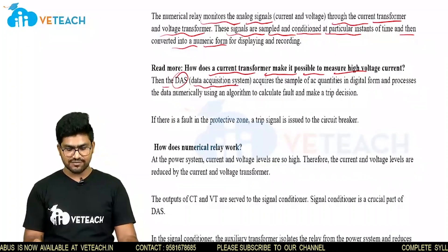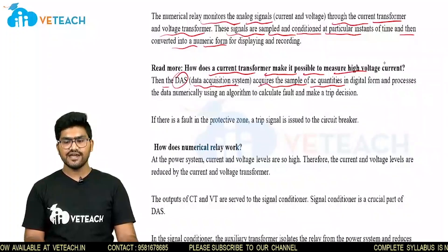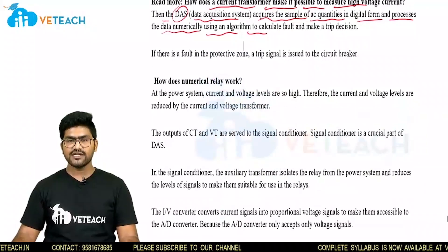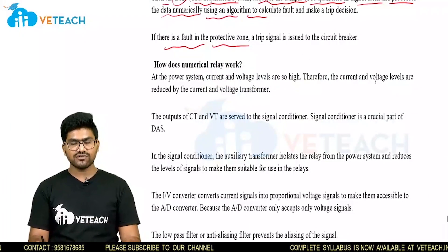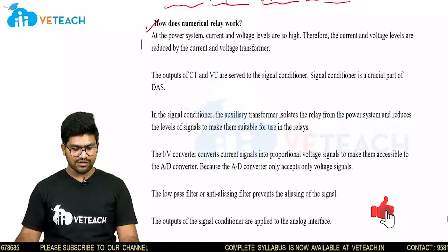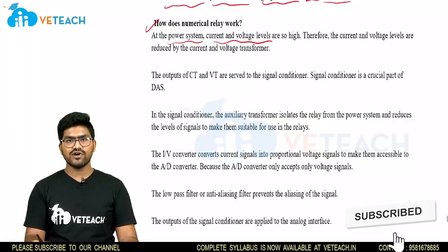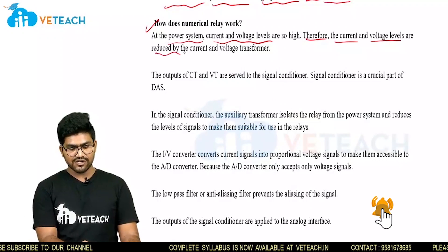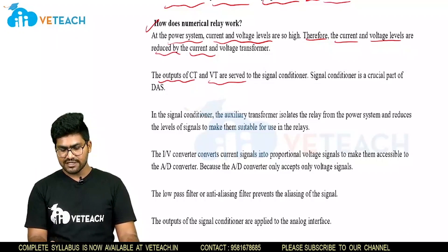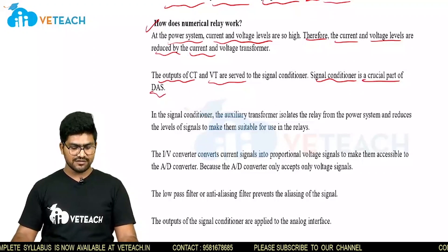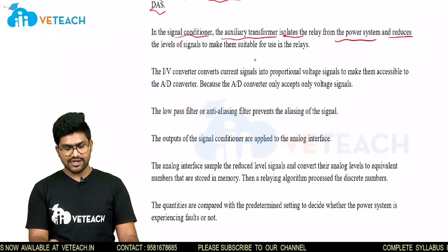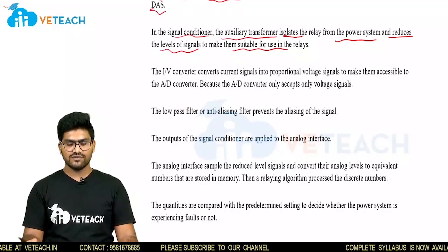A DAS, meaning data acquisition system, acquires samples of AC quantities in digital form and processes data numerically using algorithms to calculate faults and make a trip decision. If there is a fault in the protective zone, the trip signal is issued to the circuit breaker. At the power system, current and voltage levels are very high. Therefore, the current and voltage levels are reduced by current and voltage transformers. The outputs of CT and VT are served to the signal conditioner. Signal conditioning is a crucial part of the DAS. In the signal conditioner, the auxiliary transformer isolates the relay from the power system and reduces the level of signals to make them suitable for use in the relay.